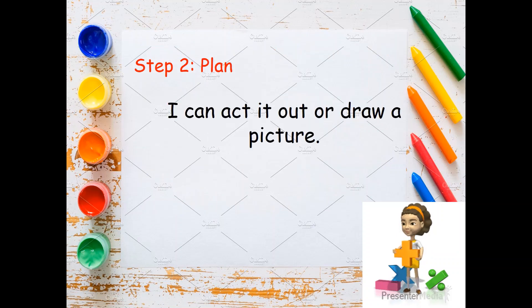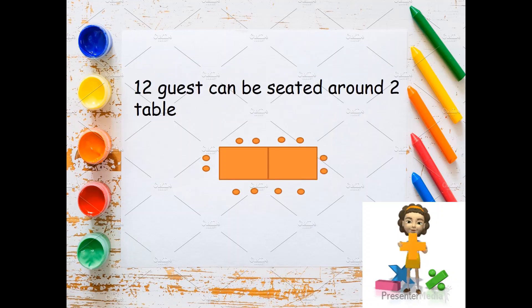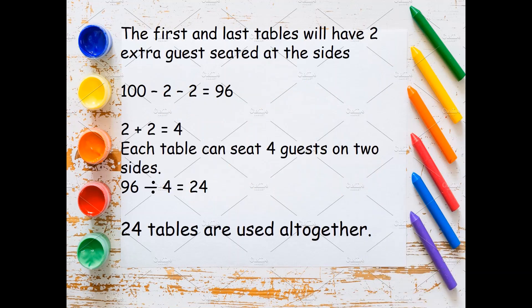Step 2: Plan — you can act it out or draw a picture. Step 3: Work out the answer. There are 8 guests that can be seated around one table. Draw a picture — 12 guests can be seated around two tables. The first and last table will have two extra guests seated at the sides. So: 100 minus 2 minus 2 equals 96. Each table can seat 4 guests on two sides, so 96 divided by 4 equals 24. There are 24 tables used altogether.